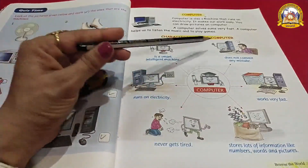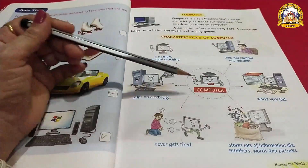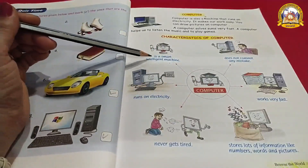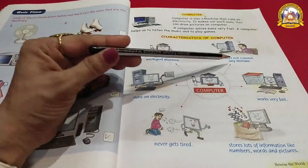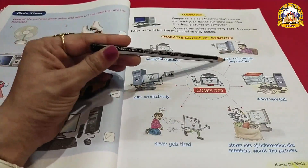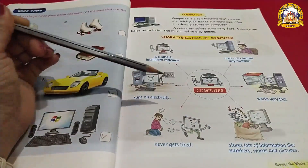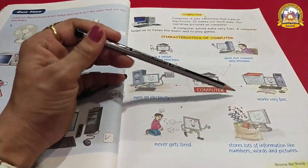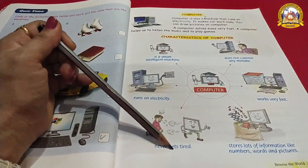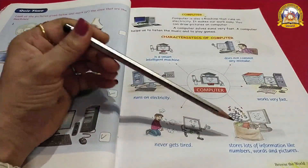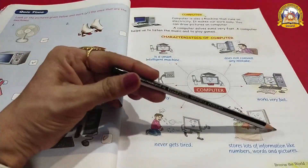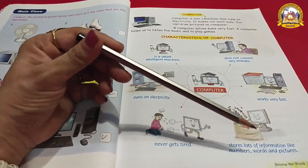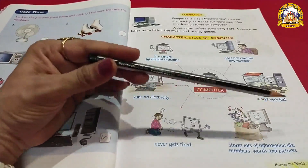So the characteristics of computer are: it is a smart and intelligent machine; does not commit any mistake; runs on electricity; works very fast; never gets tired; and stores lots of information like numbers, words, and pictures. Computer बहुत सारी information collect और store करके रखता है।